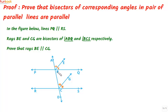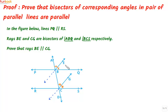Coming back to our original figure, let's discuss the approach we will take in proving BE parallel to CG. To make the approach more clear, let us extend BE and CG. Now we know that lines PQ and RS are parallel, so corresponding angles ABQ and BCS will be equal. Since these angles are equal, their halves will also be equal, which means angle ABE will be equal to angle BCG, as BE and CG are the bisectors.